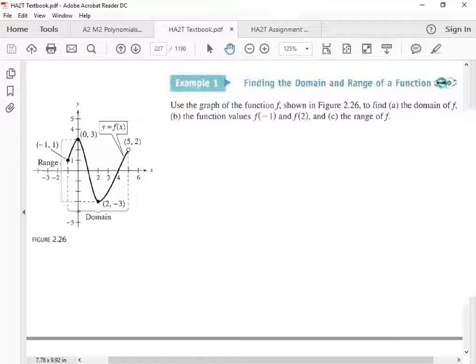We're going to look at this graph right here to answer those questions. This example is asking us to find the domain of f, find values like f of negative 1 and f of 2, and then find the range. Let's find domain and range together, and then we'll find the other things. First, our domain.